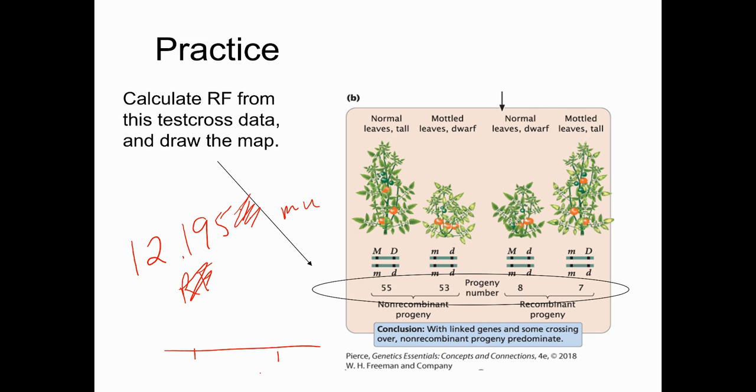So you draw a general chromosome, put the letters M and D on there. It doesn't matter if they're capital or lowercase because different organisms have different combinations of those alleles. But no matter what, those alleles or those genes are separated by 12.195 map units of distance. So that's your map.